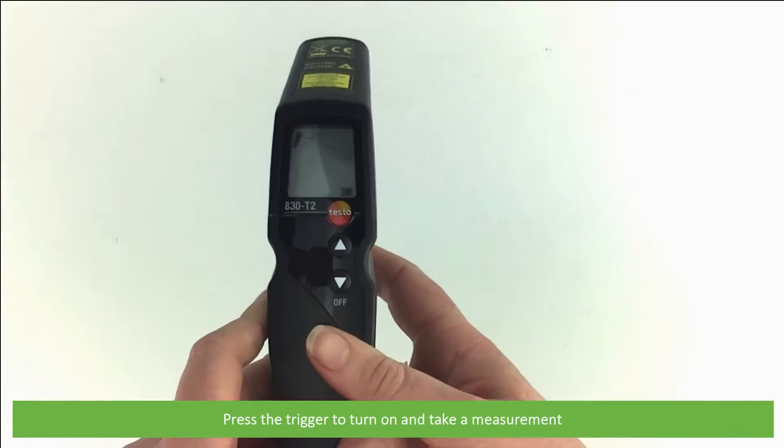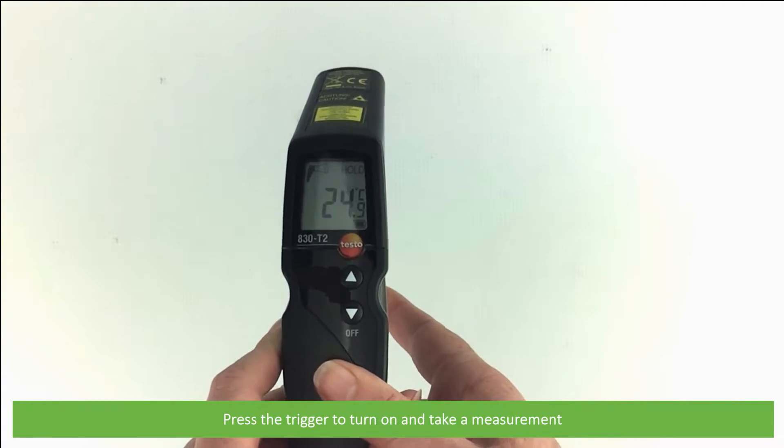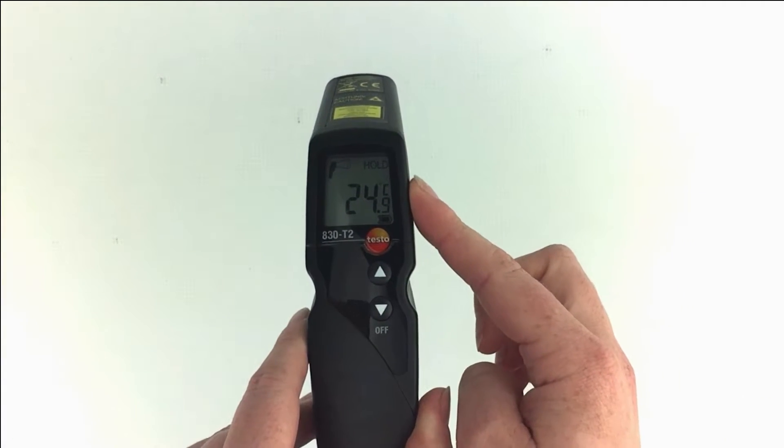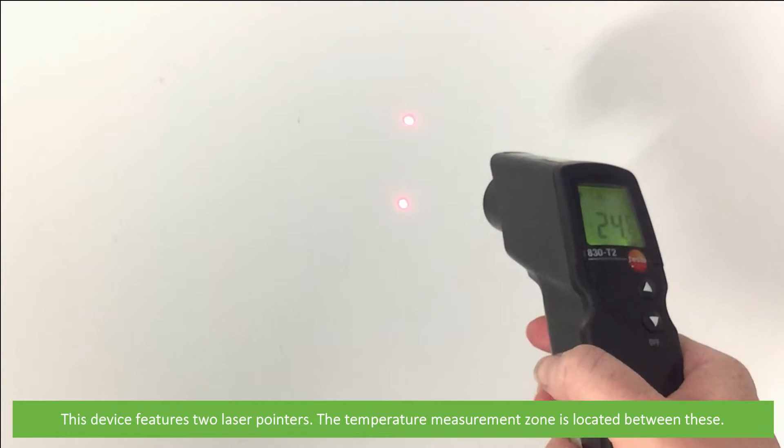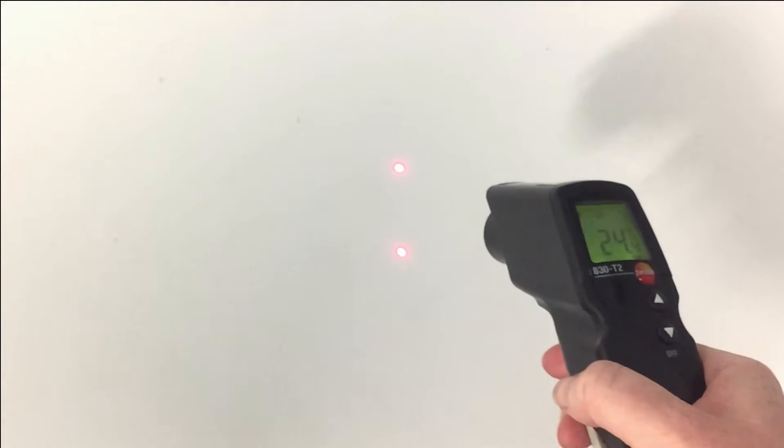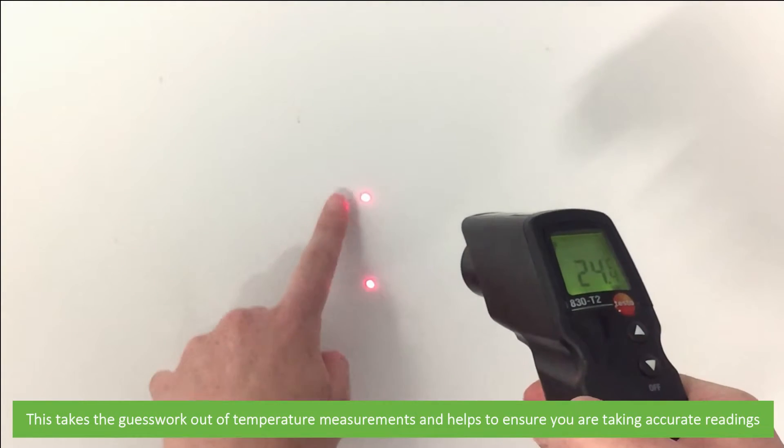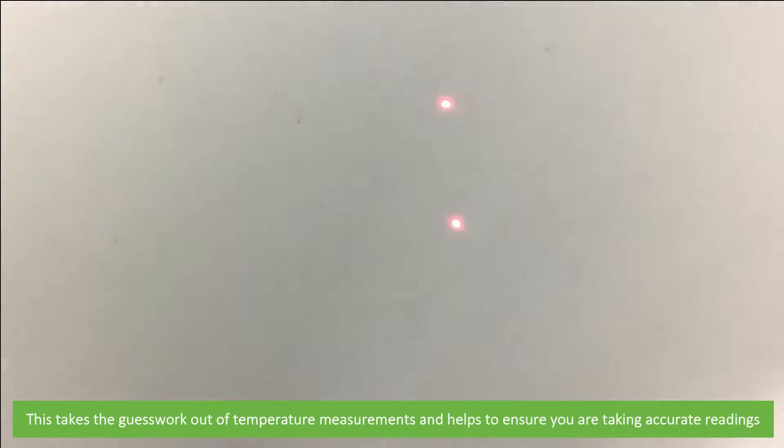Press the trigger to turn on and take a measurement. This device features two laser pointers. The temperature measurement zone is located between these. This takes the guesswork out of temperature measurements and helps to ensure that you are taking accurate readings.